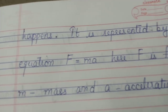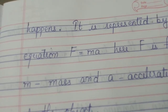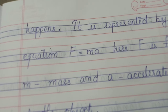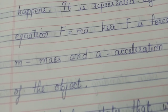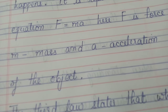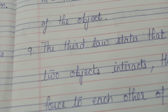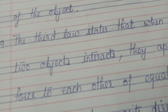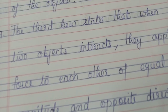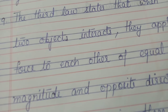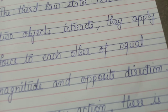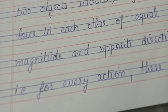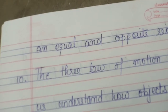It is represented by the equation F equals ma. Here, F is force, M is mass, and A represents acceleration of the object. The third law states that when two objects interact, they apply force to each other of equal magnitude and opposite direction. That is, for every action, there is an equal and opposite reaction.